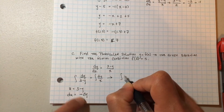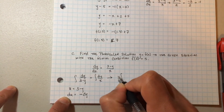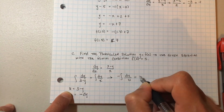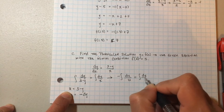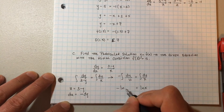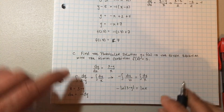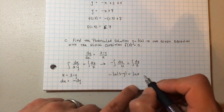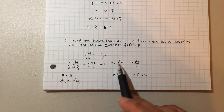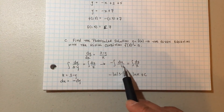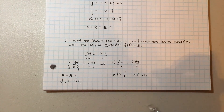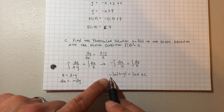Since dy = -du, we pull out the negative on the outside: -du/(3 - y) = du/u. That gives us -ln(u), which is -ln(3 - y). Remember when you take antiderivatives you have a plus C on both sides, but you bring the C from the left to the right and combine them into one constant.